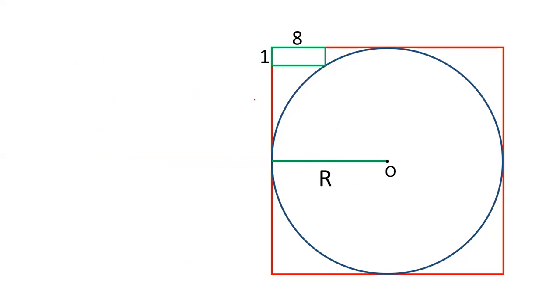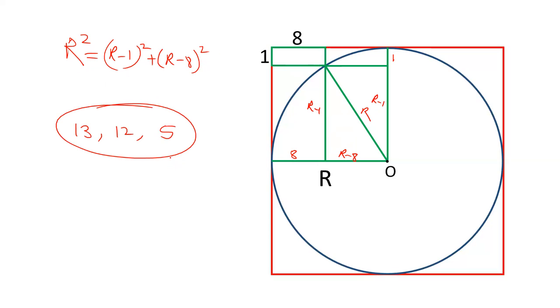So let us see one more example and then finish this video. Now the rectangle is 1 and 8. Do the same procedure. This line will be 8, this line will be 1, this will be R minus 1, this will be R minus 8, and this is R. So we have R squared equals R minus 1 squared plus R minus 8 squared. Can you find out a number R such that 1 less than R, 8 less than R, and R becomes a Pythagoras triplet? Yes, we can think 13. 1 less than 13 is 12, 8 less than 13 is 5, and 5, 12, and 13 is a Pythagoras triplet. So the radius will be 13. This will be 12 and this will be 5. So we can solve this directly without actually solving the quadratic equation.